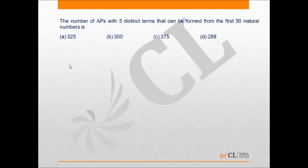This would be a level 2 question. We have to find the number of APs with 5 distinct terms that can be formed from the first 50 natural numbers.